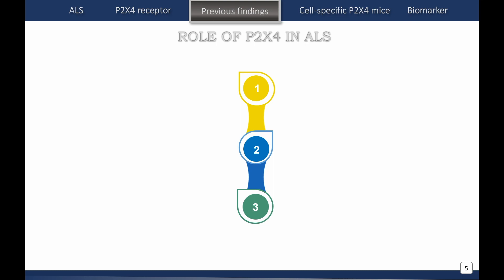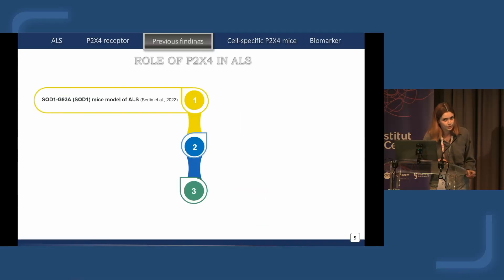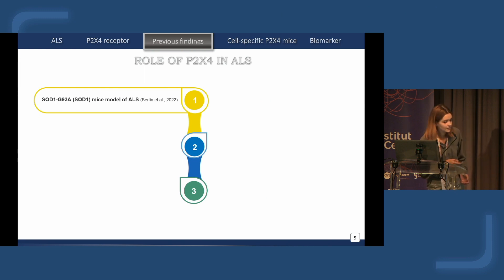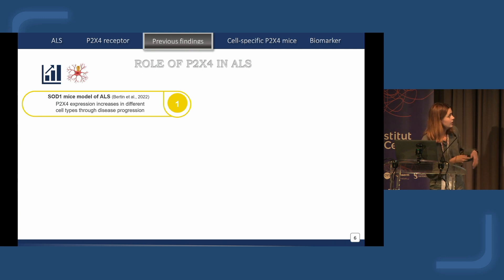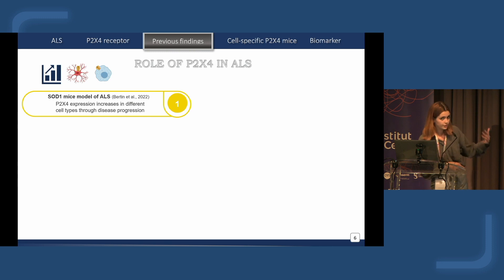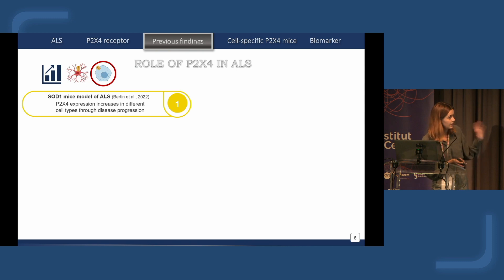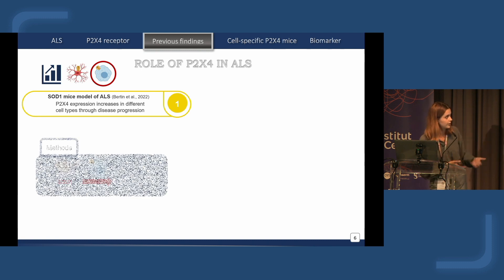Our team decided to start working on the role of P2X4 in ALS, and for that we used the SOD1 G93A, from now named SOD1, mouse model of ALS. We found in this model that many cell types were increasing P2X4 expression, such as microglia, parallel to disease progression, but also in the periphery in macrophages. We decided to focus on macrophages because of their relevant role in ALS and also because of the high expression of P2X4 in these cells.